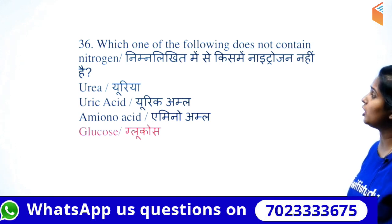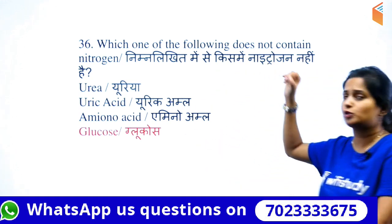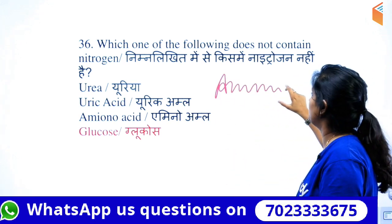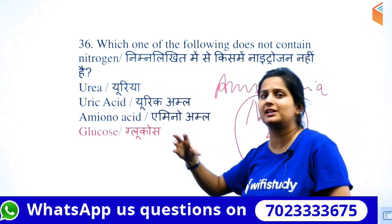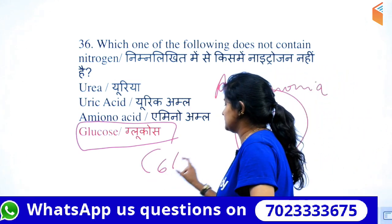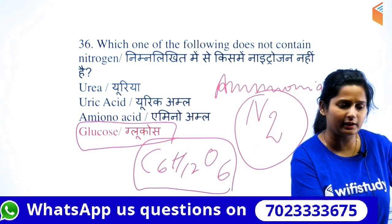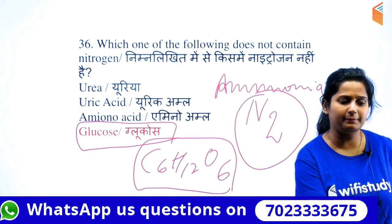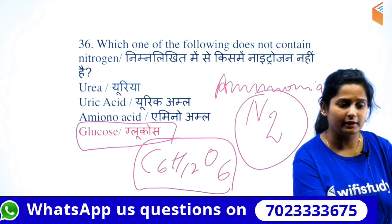Which of the following does not contain nitrogen? Waste material released in organisms is in the form of ammonia or urea, and nitrogen is present in those. But remember the formula of glucose — C6H12O6. In C6H12O6 you don't see nitrogen at all, so glucose does not contain nitrogen.